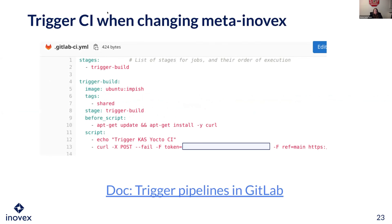One of the nice things I want to share is how to trigger one repository's CI from another — this makes the whole kas-Yocto magic work for us. You can click the link on the slides, they're online, and it works really well.